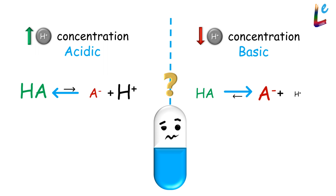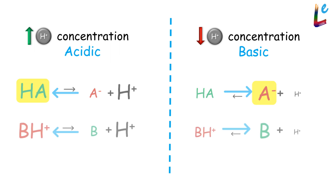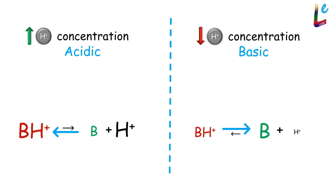In which medium does the weak acid ionize less? A weak acid ionizes less in acidic medium and more in basic medium. Likewise, a weak base ionizes less in a basic medium and more in an acidic environment.